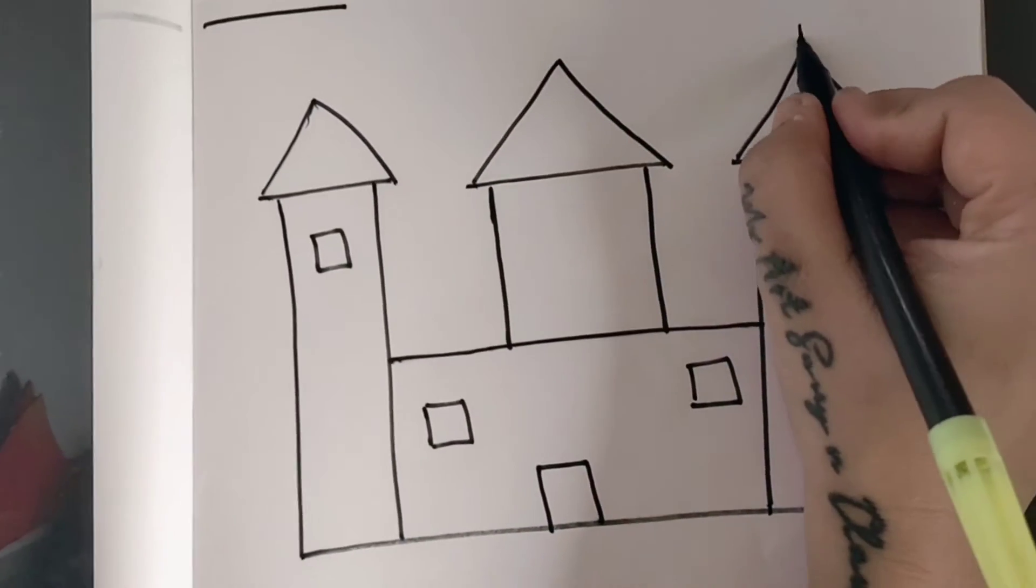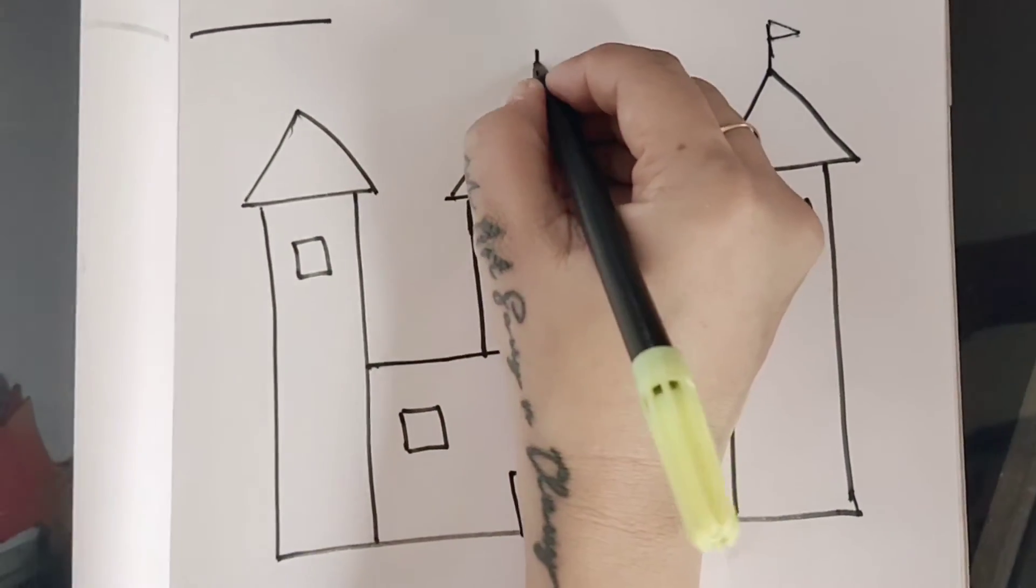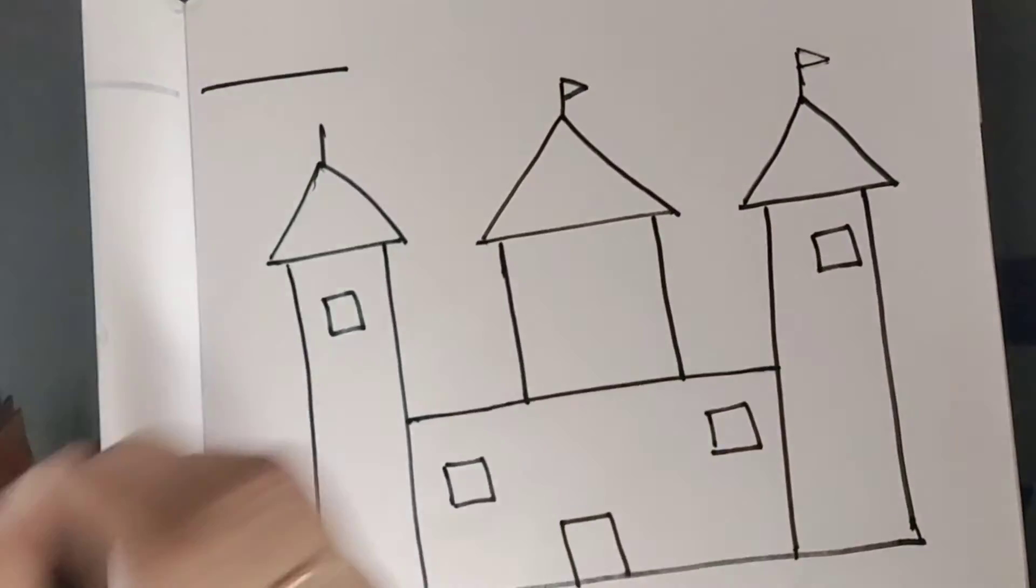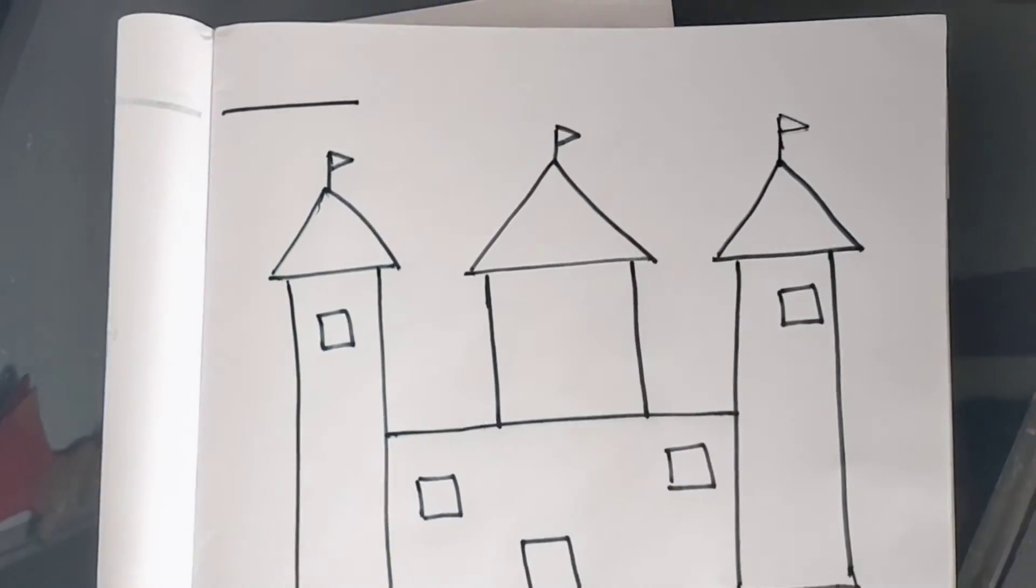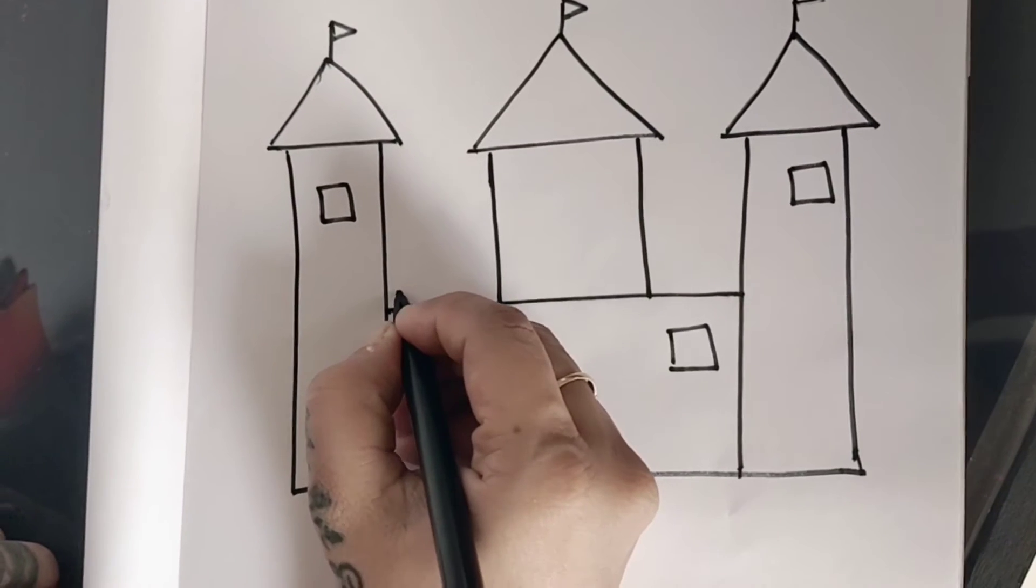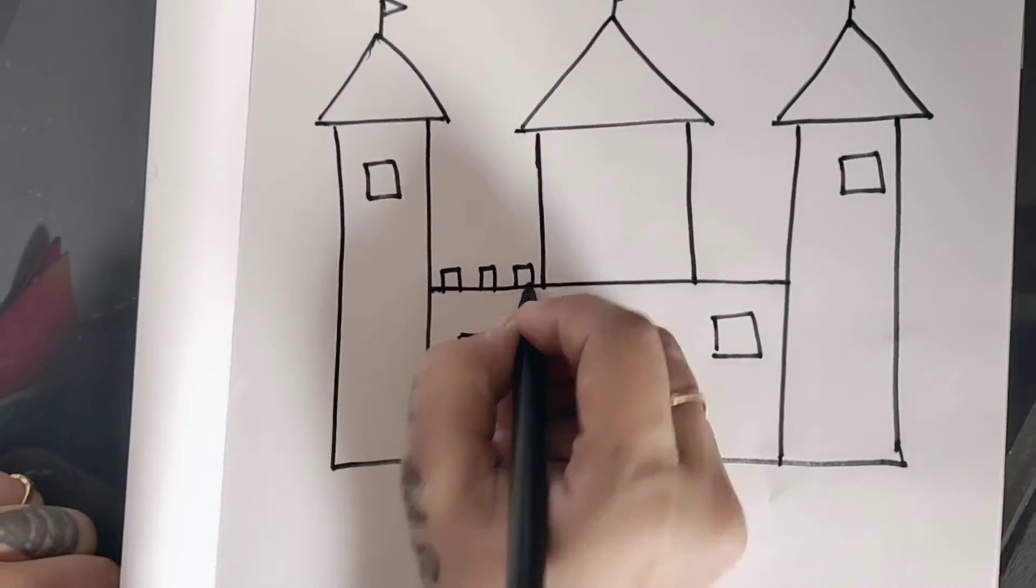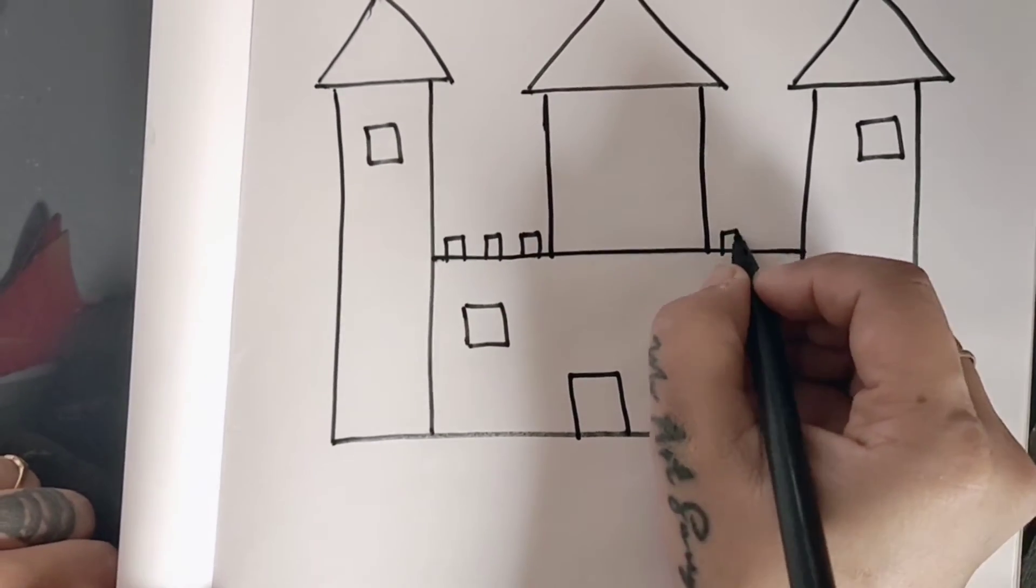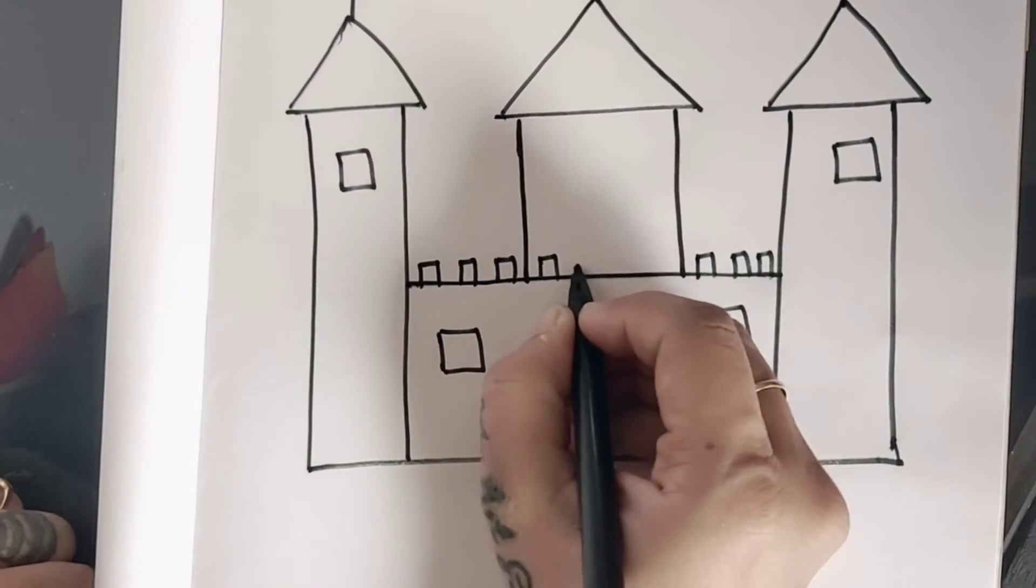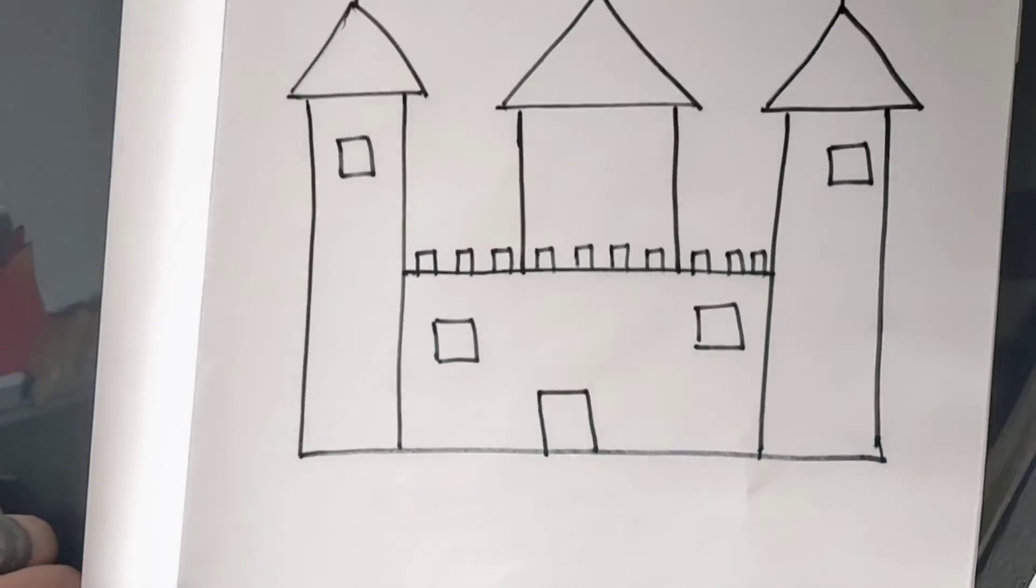Ab thoda sa decoration karne ke liye castle ke upar kya banayenge hai? Flags. Mahael ke upar aise flags lagay hootay hai na. That's a standing line and flag. See? Then what you have to do? Yahaan pe hai aise choti choti. Jis se hume ye window banayi thi na. Is type se chota chota bana dhe. See?